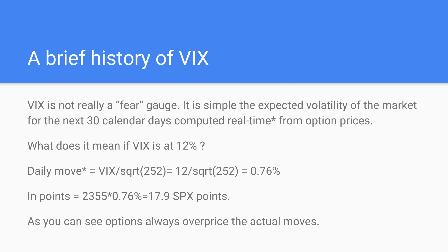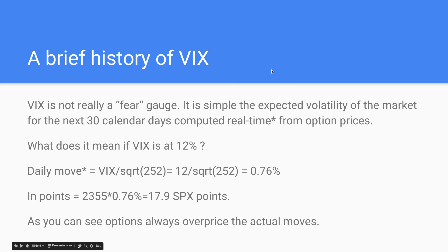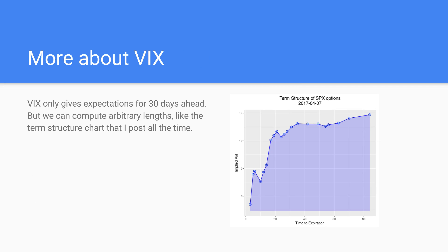The expectation from option prices is that most days SPX will be in a range of 18 points up and down. But has that actually happened? No — we haven't seen the majority of moves within that range. This means VIX is over-pricing the real volatility; options are always over-pricing the move. Whenever you see VIX, you can do this quick computation. If you don't want to bother with the square root of 252, you can round it to 16 — just divide VIX by 16 for a good approximation.